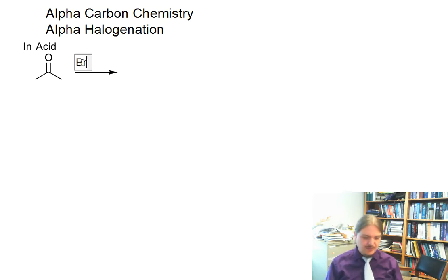And I am pretty much going to use bromine. I guess you could use chlorine, but bromine, you could use iodine. Actually, this is a reaction that iodine works out pretty well. In acid, you can end up halogenating the aldehyde or ketone at the alpha position.